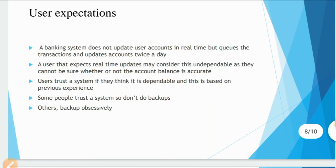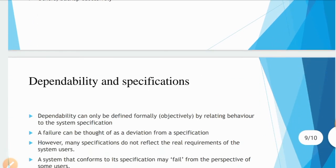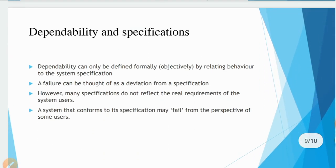Regarding user expectations: a banking system does not update user accounts in real time but queues transactions and updates accounts twice a day. A user that expects real-time updates may consider this undependable, as they cannot be sure whether the account balance is accurate. Users trust a system if they think it is dependable, based on previous experience.